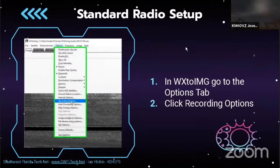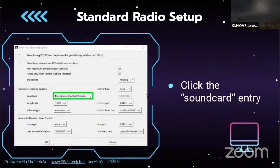When you have WX2IMG installed, you need to tell it where to listen for the audio stream. If your radio is connected via an auxiliary plug into the line-in on your computer, go into WX2IMG, click the Options tab at the top, and go to Recording Options. In the middle you'll see Common Recording Options and a Sound Card setting. You don't need to mess with sample rate or antenna type — just click on Sound Card and make it say Line In if you're using the line-in, or Microphone if you're using the mic input.